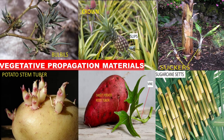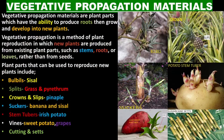Vegetative propagation materials are plant parts which have the ability to produce roots, then grow and develop into new plants. Vegetative propagation is a method of plant reproduction in which new plants are produced from existing plant parts, such as stems, roots, or leaves, rather than from seeds.